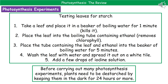Once done, take the leaf out, wash it with water, and spread it on a white tile before adding a few drops of iodine solution. Iodine reacts with any starch present to give a black colour. One thing to remember: if you're testing any particular factor in photosynthesis, you need to de-starch the plant first — remove any existing starch before the actual trial. You do this by putting the plant in the dark for 24 hours or more.